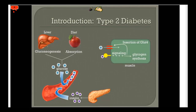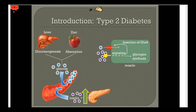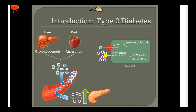The pancreas will start pumping out a lot of insulin to try to compensate, but eventually glucose builds up in the bloodstream — that's hyperglycemia. When this goes on chronically, the pancreas stops producing insulin. That's why you see patients with type 2 diabetes eventually on insulin exogenously, because their pancreas no longer produces it.